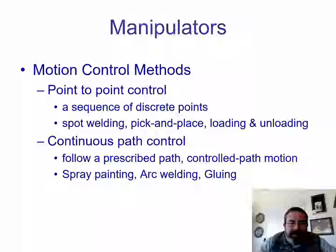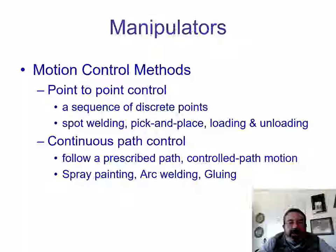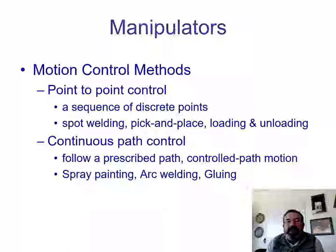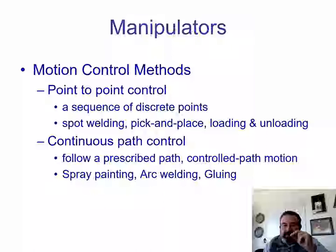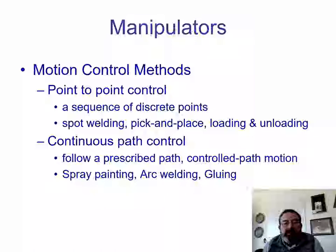In order to classify manipulators, we have to think about the motion control methods that are available, and also they are used for different applications. The first one is point-to-point control — when you have a sequence of discrete points, meaning that the trajectory is not so important. For example, in spot welding, the robot just puts the end effector at some point and then at another point. Trajectory is not very important. Typical applications are spot welding, pick-and-place, and loading and unloading objects.